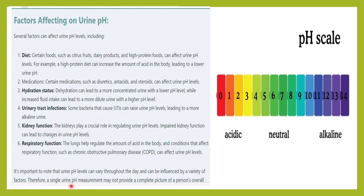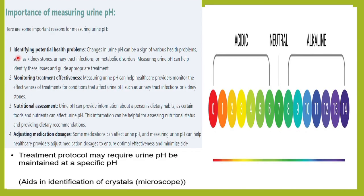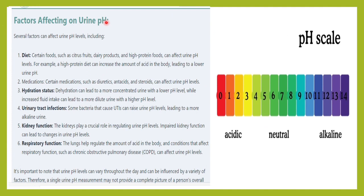There are many factors which affect the urinary pH. Health-related issues can be identified with the help of urine pH. For example, in kidney stones, urinary tract infections, or certain metabolic disorders, the urine pH keeps changing. We can also monitor pH to assess if a treatment is effective, the patient's nutritional status, dietary habits, and diabetes control.